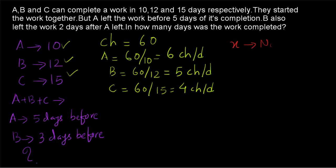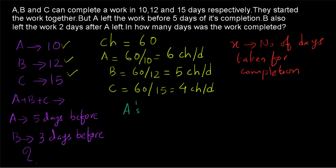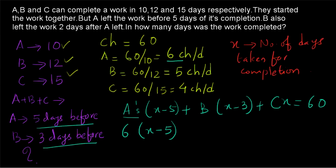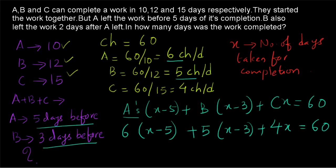We are taking the total number of days for completion as X. A is leaving 5 days before completion, so A is working for X minus 5 days. B is leaving 3 days before completion, so B is working for X minus 3 days. And C is working till the end, so C is working for X days. The total chocolates consumed must equal 60. A contributes 6 into X minus 5 chocolates, B contributes 5 into X minus 3 chocolates, and C contributes 4X chocolates. So 6(X minus 5) plus 5(X minus 3) plus 4X equals 60.